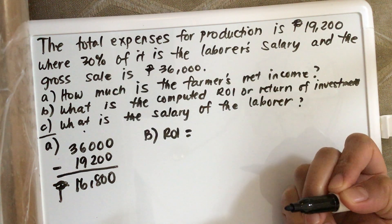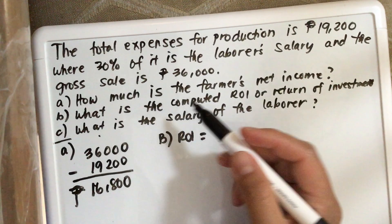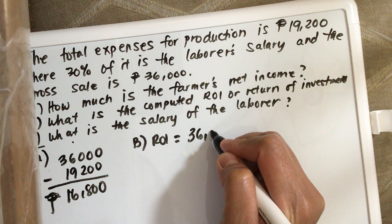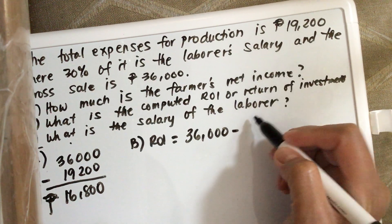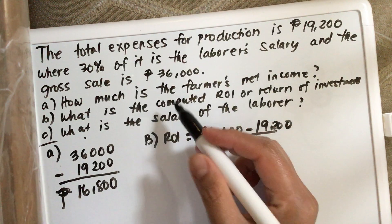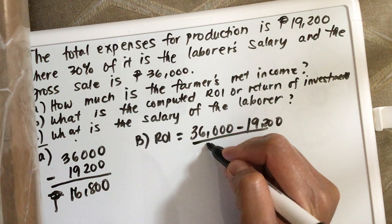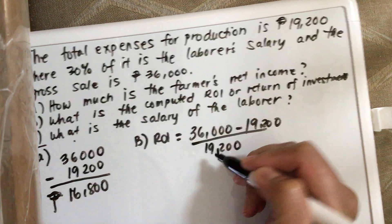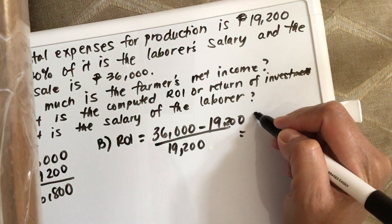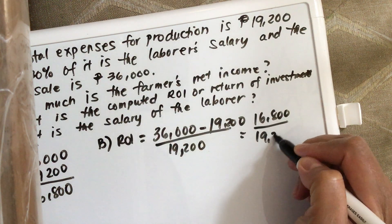So the gross sale is 36,000 minus the investment which is 19,200, and this is divided by the cost of investment which is 19,200. So this equals 16,800 all over 19,200.